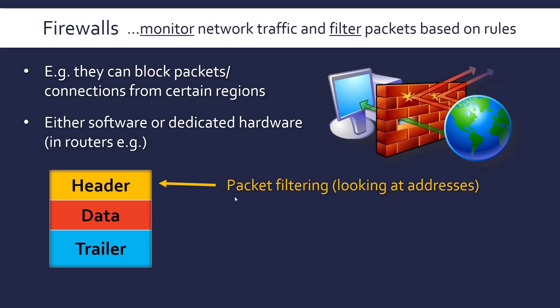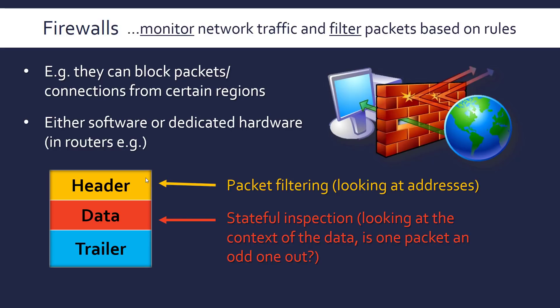The first generation filters packets just by looking at IP addresses — it has a list of allowed IP addresses or regions and compares them to the IP addresses in the header. The second generation is called Stateful Inspection, which is a much more clever approach. It looks at the context of the data: since packets are sent in a sequence, if one packet is out of place or suspicious, it can filter based on that. Modern firewalls use many methods including these two.